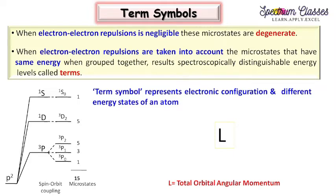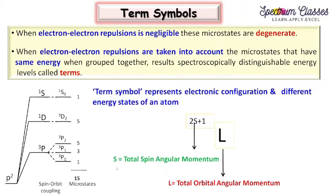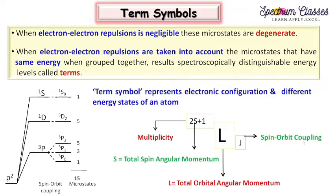We get different groups of microstates due to electron-electron repulsion, and we get different spectroscopically distinguishable energy levels which are termed as terms. The term symbol represents the electronic configuration and different energy states of an atom. Here we have capital L - the total orbital angular momentum. The next is 2S plus 1, the multiplicity. S here is the total spin angular momentum. The next is J, the subscript - the total angular momentum which comes from the spin-orbit coupling. This is the representation of a term symbol.